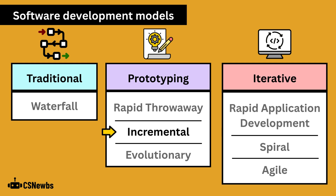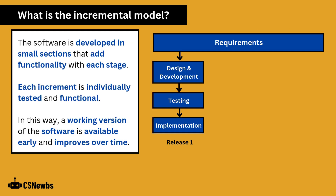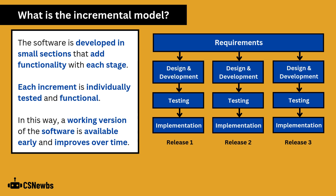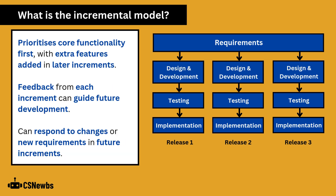The incremental model falls into the prototyping category of software development models. The software is developed in small sections that add functionality with each stage. Each increment is individually tested and functional. A working version of the software is available early and improves over time. This model prioritizes core functionality first, with extra features added in later increments. Feedback from each increment can guide future development, and it can respond to changes or new requirements in future increments too.